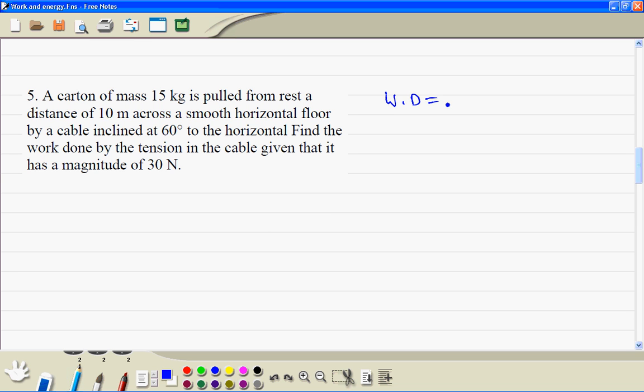So the work done is equal to force times distance. Now the resolved part of force would be F times cos theta. This is 30 times 10 times cosine 60.